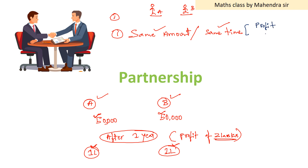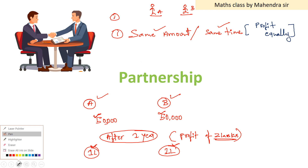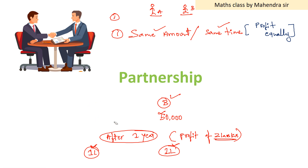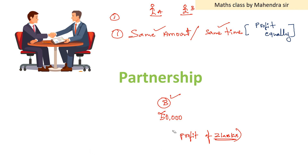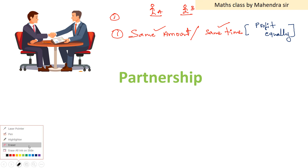That is the key rule for category one: when both people invest the same amount for the same time period, profit will be shared equally. So half of the profit goes to A and half goes to B.